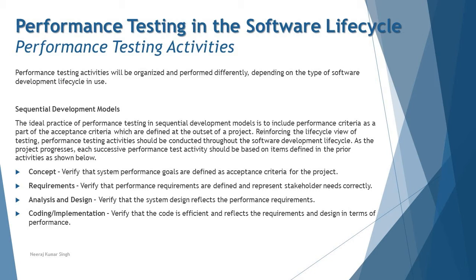We do understand what exactly sequential development models look like. We have the V-model and the Waterfall model, where one stage follows another and the previous stage is frozen before moving to the next. The ideal practice of performance testing in sequential development models is to include performance criteria as part of the acceptance criteria, which are defined at the outset of a project — much earlier, when requirements are being defined — and to determine how much testing would be enough from a performance point of view, or whether that requirement has scope for performance testing at all.